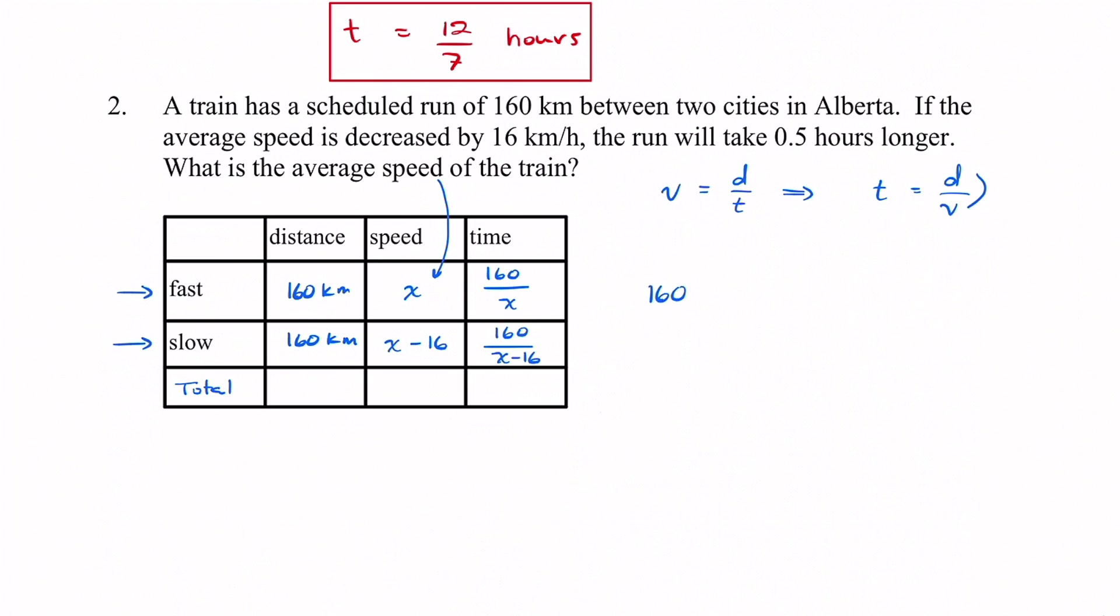We're going to have 160 over x minus 16, that's the slow time, minus 160 over x, that's our fast time. And when I subtract those two times I should get 0.5. Which 0.5 as a fraction is just a half. So I'm going to change this into a half.